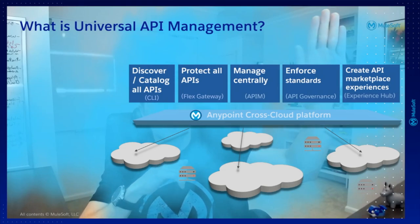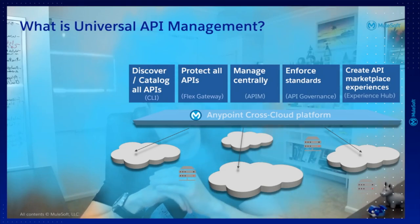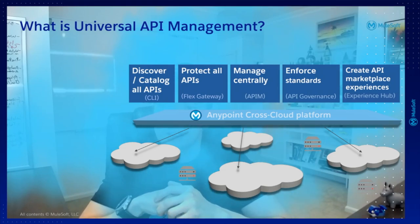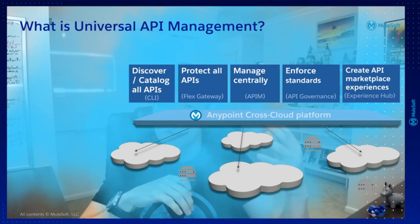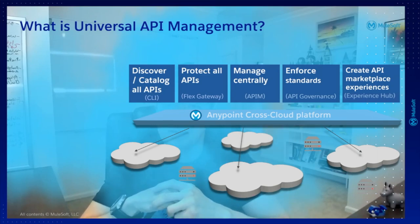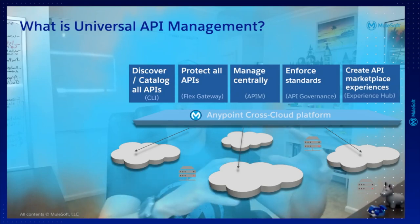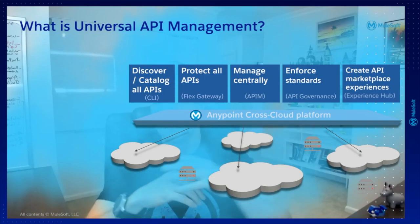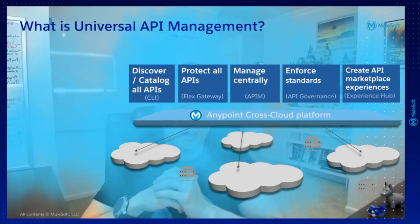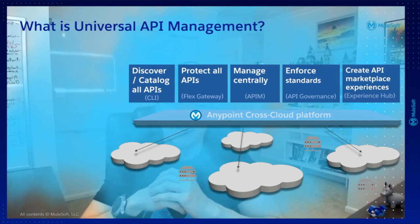The next part of universal API management is enforcing the standards, and this is another product basically called API governance. With API governance, we are going to be able to see at runtime whether we are complying with all the different policies and quality standards that need to be met as part of our applications.